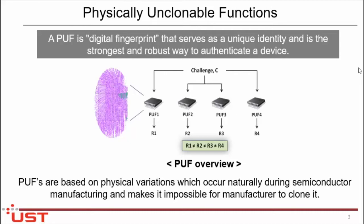PUF is basically a digital fingerprint that serves as a unique identity, which serves as the strongest and most robust way to authenticate a device. As you can see in the figure, there are four different ICs. If you challenge them with the same challenge input, they always produce different responses. That is very important to secure our devices and our data in terms of security. PUF is fabricated based on unique physical characteristics, which are very easy to fabricate but very hard to clone.